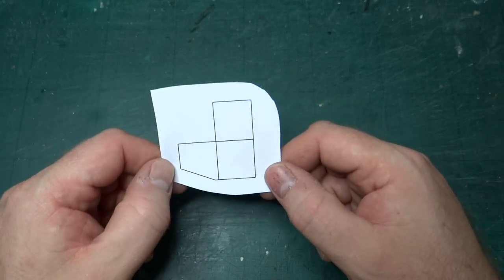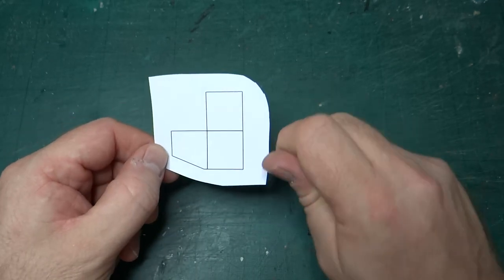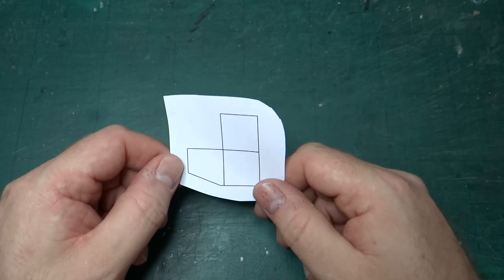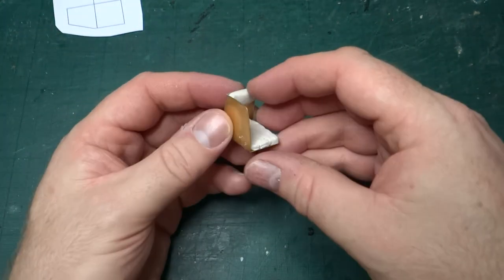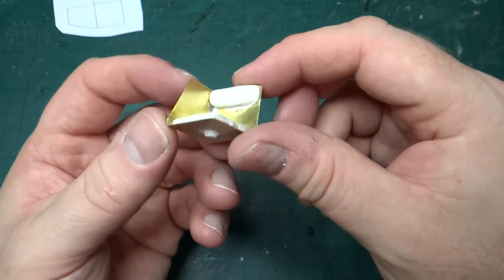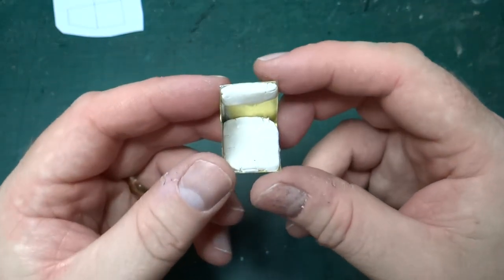I scored the fold lines with a knife and then used the hold and fold just to make sure that they folded really nice and sharp.